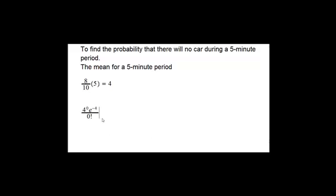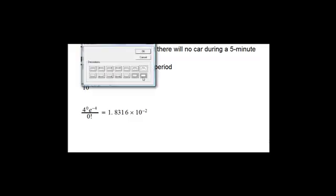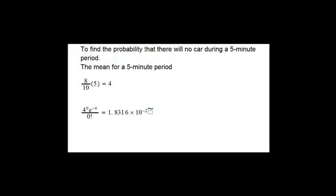And now look at the Poisson probability density function. So we have 4 to the 0 e to the negative 4 over factorial of 0, both these guys are 1. So what will happen? This will be approximately 0.018316. Let me write it down for you. So the answer is approximately 0.0183.